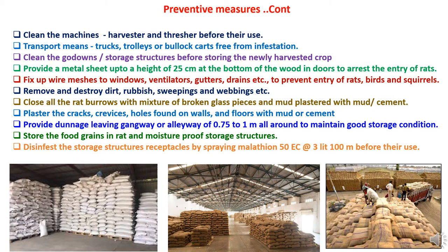We must prevent entry of rodents like rats, birds, and squirrels, and remove and destroy dirt, rubbish, sweeping materials, and webbing from stores. All rat burrows found in the godown should be closed with a mixture of broken glass pieces and mud plastered with mud and cement. Cracks, crevices, and holes in walls and floors should be plastered. Drainage, lining, or a pathway of 0.75 to 1 meter all around should be provided to maintain good storage conditions. Food grains should be stored in inert and moisture-proof storage structures, and storage structures and receptacles should be disinfected by spraying malathion or other chemicals.